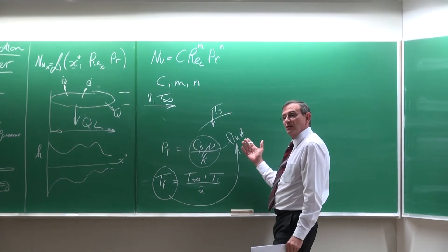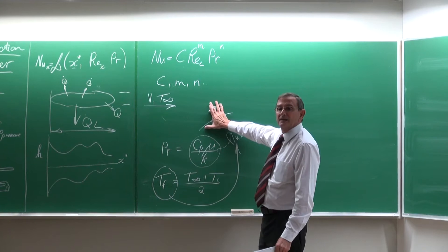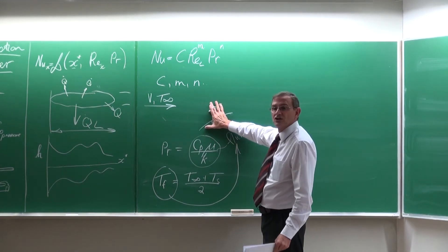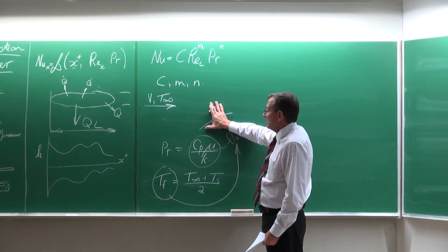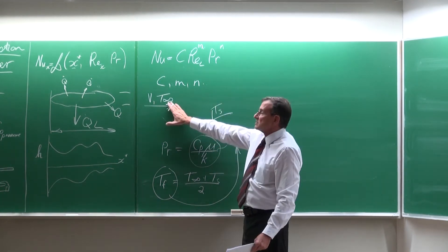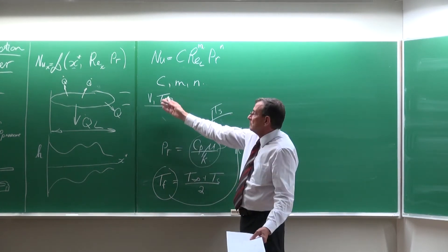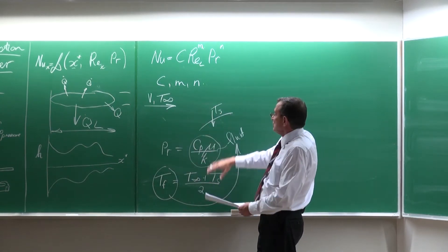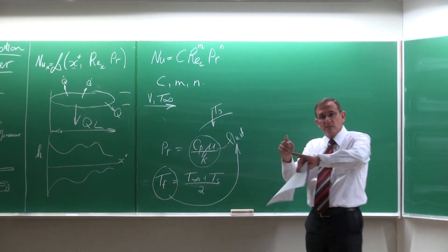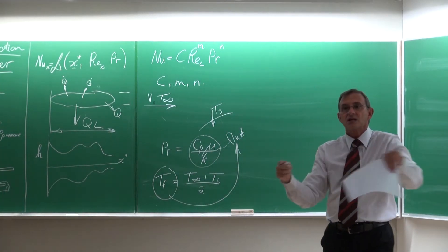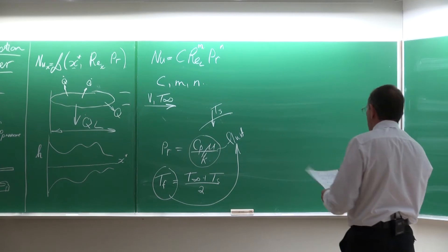It might be that in a problem the surface temperature is not given — it's the unknown you must determine. In that case, start with the properties at the temperature you know, go through the calculation, determine Ts, then recalculate your film temperature, get the revised properties, and do the calculation again. Normally you don't have to iterate more than two times; it will converge very quickly.